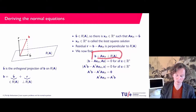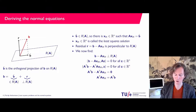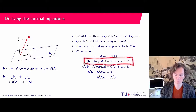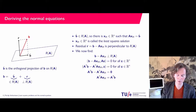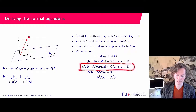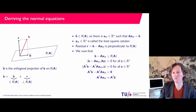The residual is perpendicular to the range of A, which means that for any vector in that range, it must be orthogonal to B minus A times X_m. Vectors in the range of A all have the form AZ with Z in R^N. So the condition is that the inner product of B minus A times X_m with AZ should be zero for all possible Z — this covers the full range of A.